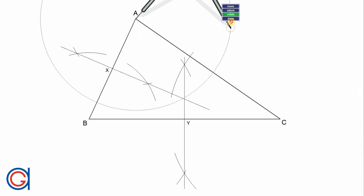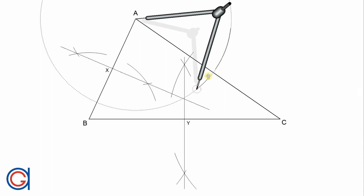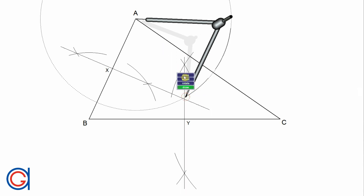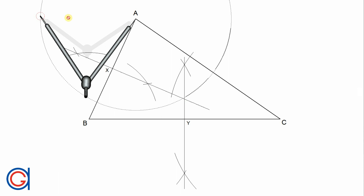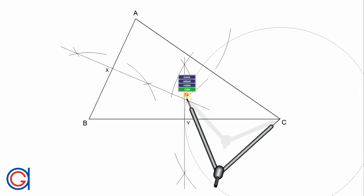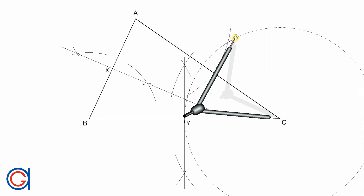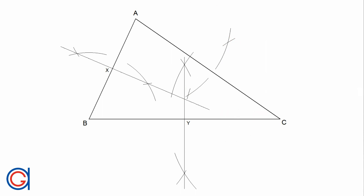And now finally we will work out the perpendicular bisector of the last side AC. Setting the compass slightly longer than half the length of AC, we scribe an arc above and below. And now with the same radius and setting our compass on point C, we scribe two new arcs intersecting our previously drawn arcs. Joining these two intersections with a line, we find our third midpoint Z.